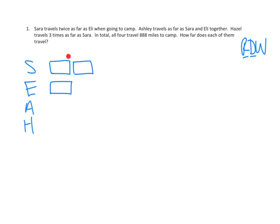So if Eli travels this far, Sarah travels twice as far. Ashley travels as far as Sarah and Eli together. Sarah and Eli together — that's three of these. So Ashley travels three of those distances: one, two, three.